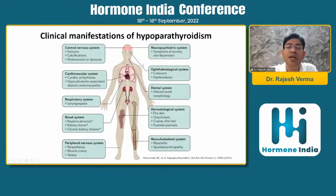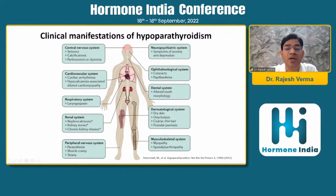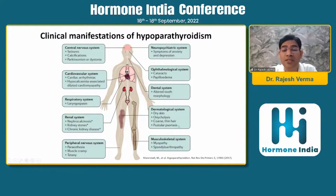These pictures show the clinical manifestations of hypoparathyroidism. Most clinical manifestations are associated with the peripheral nervous system — paresthesia, muscle cramps, and tetany are the most common clinical features. Less commonly encountered but more important are calcifications, especially in the basal ganglia and cerebellar areas; cardiovascular features like cardiac arrhythmias and cardiomyopathies; respiratory involvement causing laryngospasm; renal involvement with nephrocalcinosis and lithiasis, increasing the risk of chronic kidney disease when the patient is on therapy; neuropsychiatric symptoms like anxiety and depression; cataract; altered tooth morphology; skin manifestations such as dry skin and onycholysis; and musculoskeletal involvement in the form of myopathy.